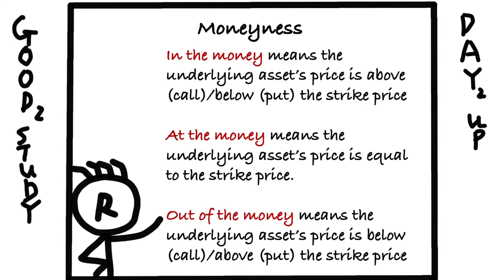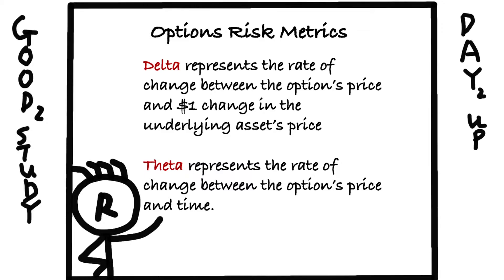A very important concept in options is moneyness. There are three categories: in the money, at the money, and out of the money. In the money means the underlying asset's price is above the strike price for call options, and below the strike price for put options. At the money means the underlying asset's price is equal to the strike price. Out of the money means the underlying asset's price is below the strike price for calls and above the strike price for puts. Generally speaking, in the money options are the most expensive, followed by at the money, and out of the money is the cheapest.